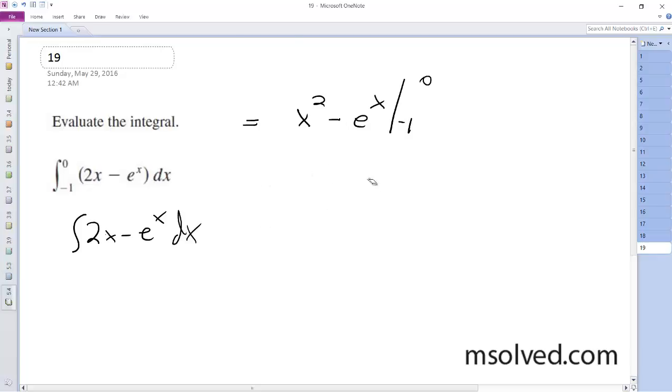It should be 0 squared minus e to the 0, and then minus negative 1 squared minus e to the negative 1.